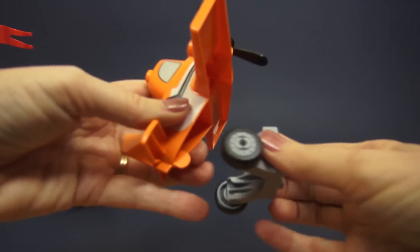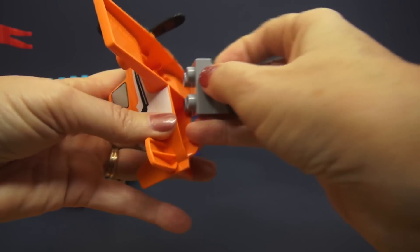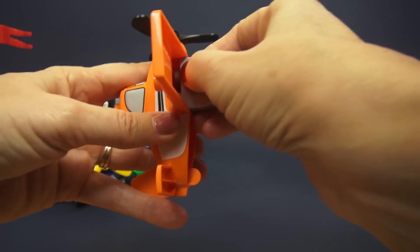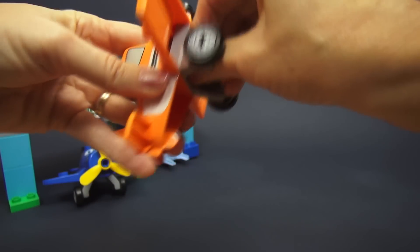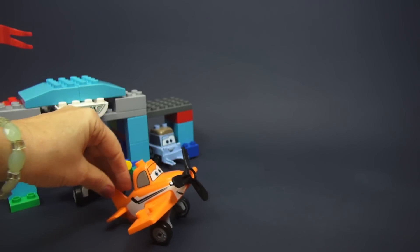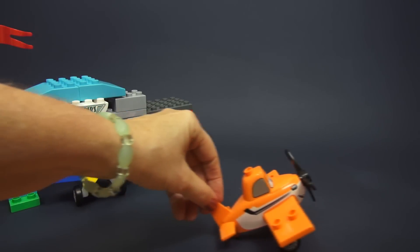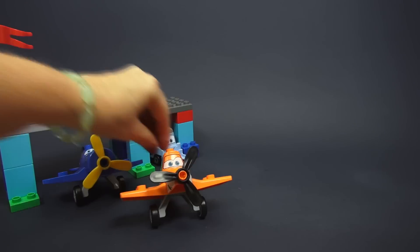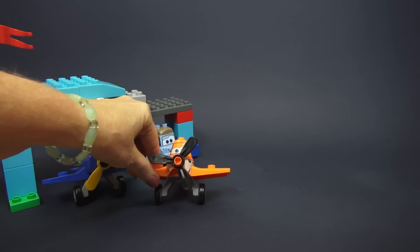And then he also has wheels that snap into place, there you go. So when a plane is on the ground it can taxi, so he can taxi now with his wheels and he can fly with his propeller.